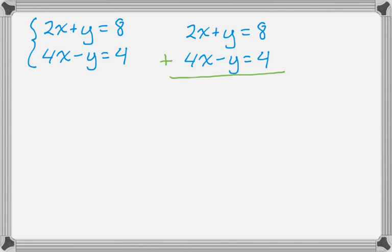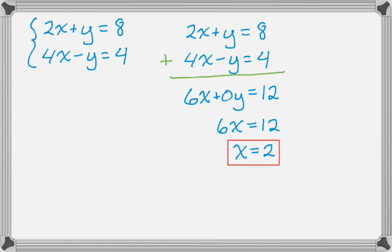2x plus 4x gives me 6x. The y's cancel, so I get 0y, and 8 plus 4 gives me 12. So now I have 6x equals 12, which tells me that x is 2 by dividing both sides by 6.